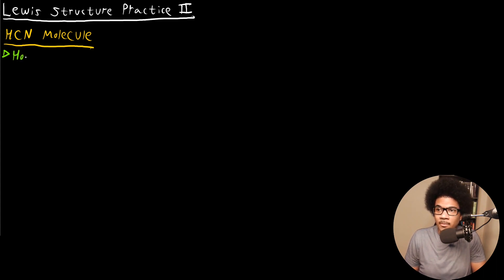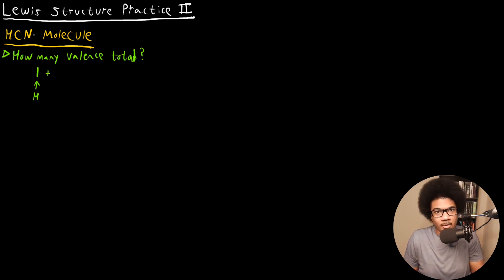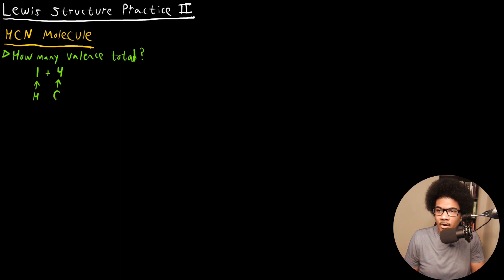How many valence electrons total? This is always where you want to start — figure out how many total valence electrons you have in your molecule. For hydrogen, we're going to have one. For carbon, we're going to have four valence electrons — 2S2, 2P2 — so four valence electrons coming from the carbon atom.